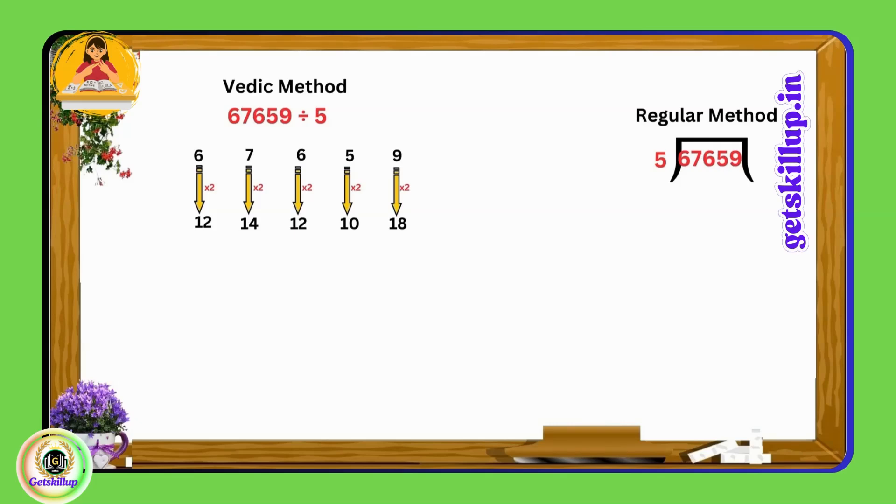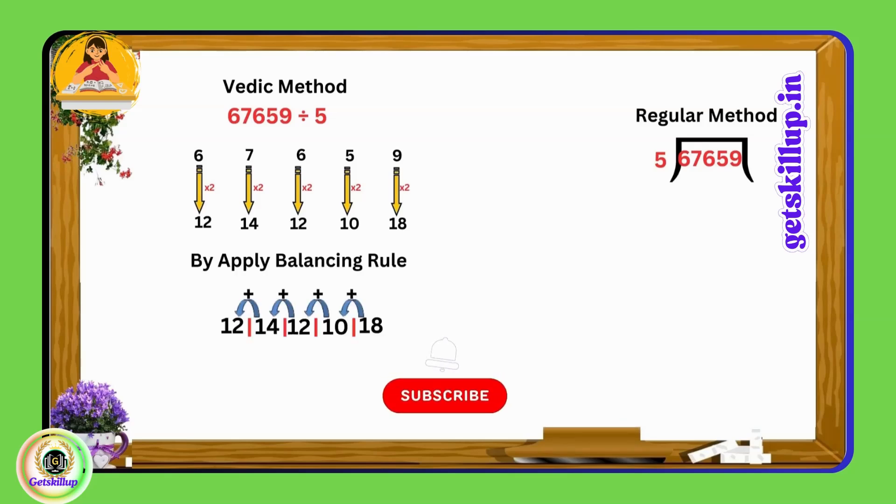Now let's apply the balancing rule. We keep the units place 8 as it is and add the adjacent digits: so 1 plus 0 is 1, 1 plus 2 is 3, 1 plus 4 is 5, 1 plus 6 is 7, and we leave the last digit 1 as it is. Therefore the result is 13531.8. We double the number and maintain the decimal point before the units place. The final answer is 13531.8. This method simplifies the process significantly.